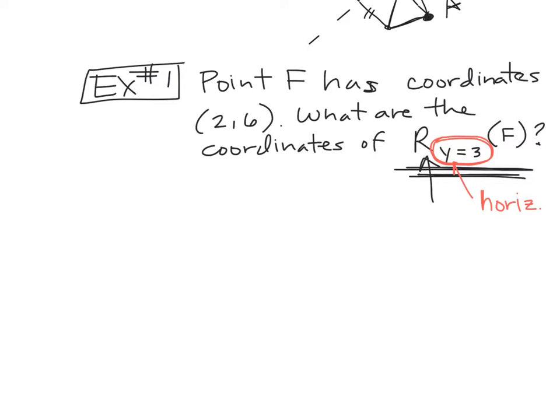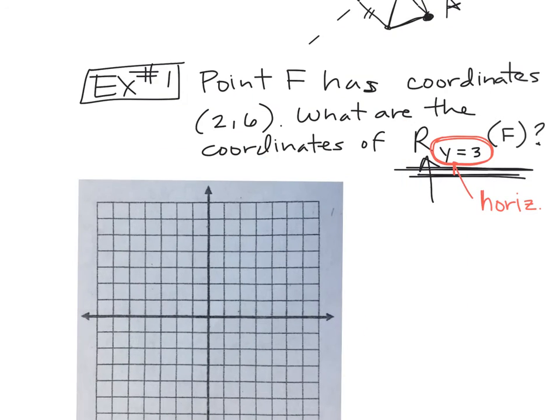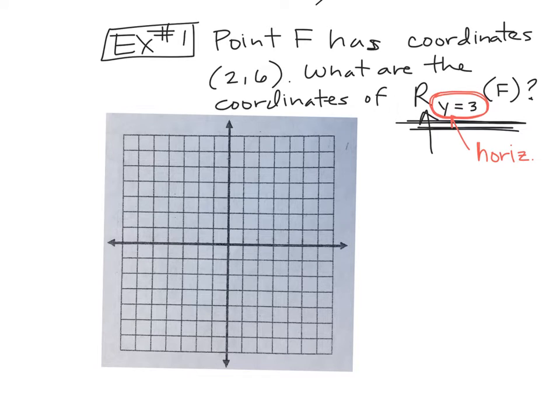Horizontal. So we know this is a horizontal line at 3. So if you have a graph, and they've told us that point F is at two, six. So one, two, one, two, three, four, five, six. Here's point F. I want to know what are the coordinates if we reflect over Y equals 3. That's what this is saying. A reflection over the line Y equals 3 of point F. So we need a horizontal line where Y is 3.